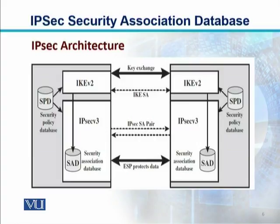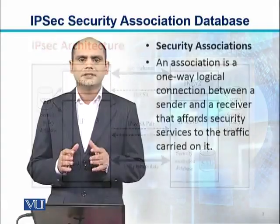IKE Version 2 is used for key exchange, and IKE Security Associations will be used for the dotted lines shown in the diagram. The security association exchange is represented by unidirectional arrows. Finally, bidirectional arrows represent ESP protecting the data, as shown in the diagram.